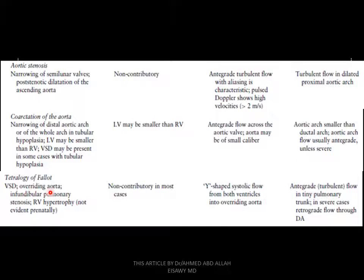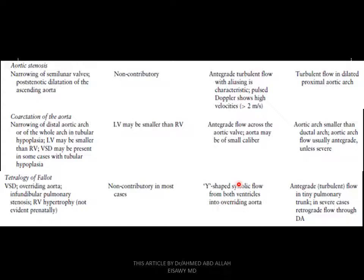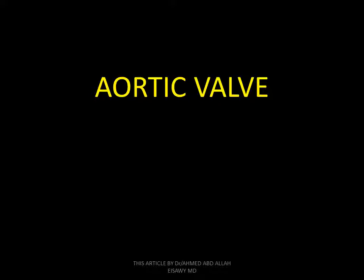Tetralogy of Fallot: VSD, overriding aorta, infundibular pulmonary stenosis with hypertrophy — not evident prenatally. Non-contributory in most cases. Y-shaped systolic flow from both ventricles into the overriding aorta. Five-chamber view: antegrade turbulent flow. Three-vessel view: in tiny pulmonary trunk in severe cases, retrograde flow across the arch.